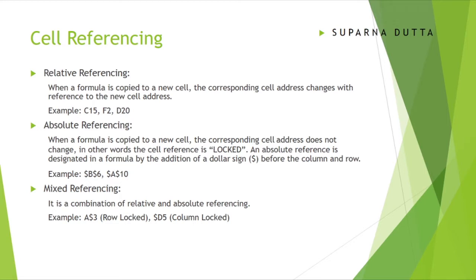There are three kinds of cell referencing: relative cell referencing, absolute cell referencing, and mixed cell referencing. In relative cell referencing, when you write a formula in one particular cell and copy it to a new cell, the corresponding cell address changes relative to the new cell address. Examples of relative references are C15, F2, and D20 — just the column name and the row number.